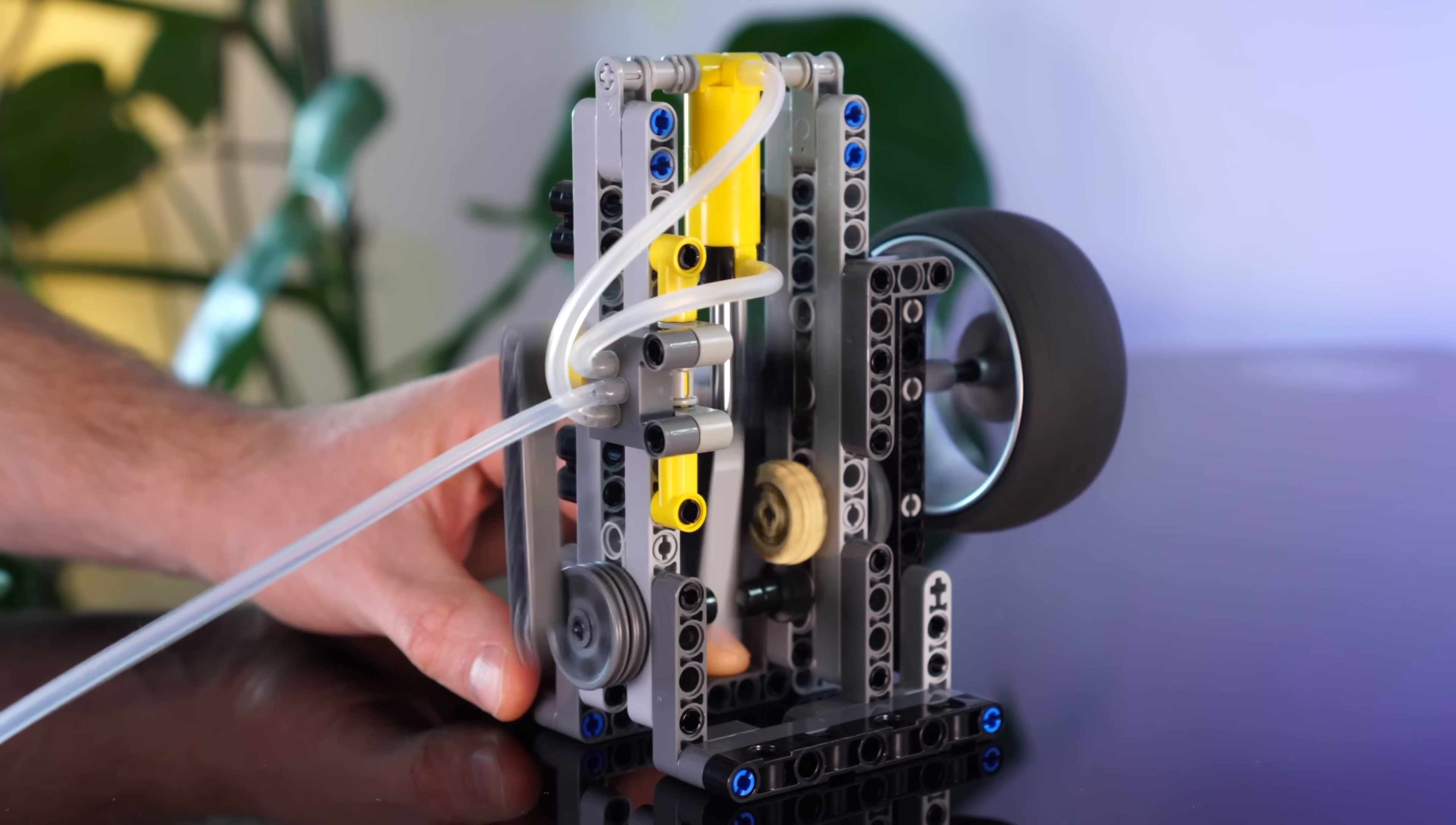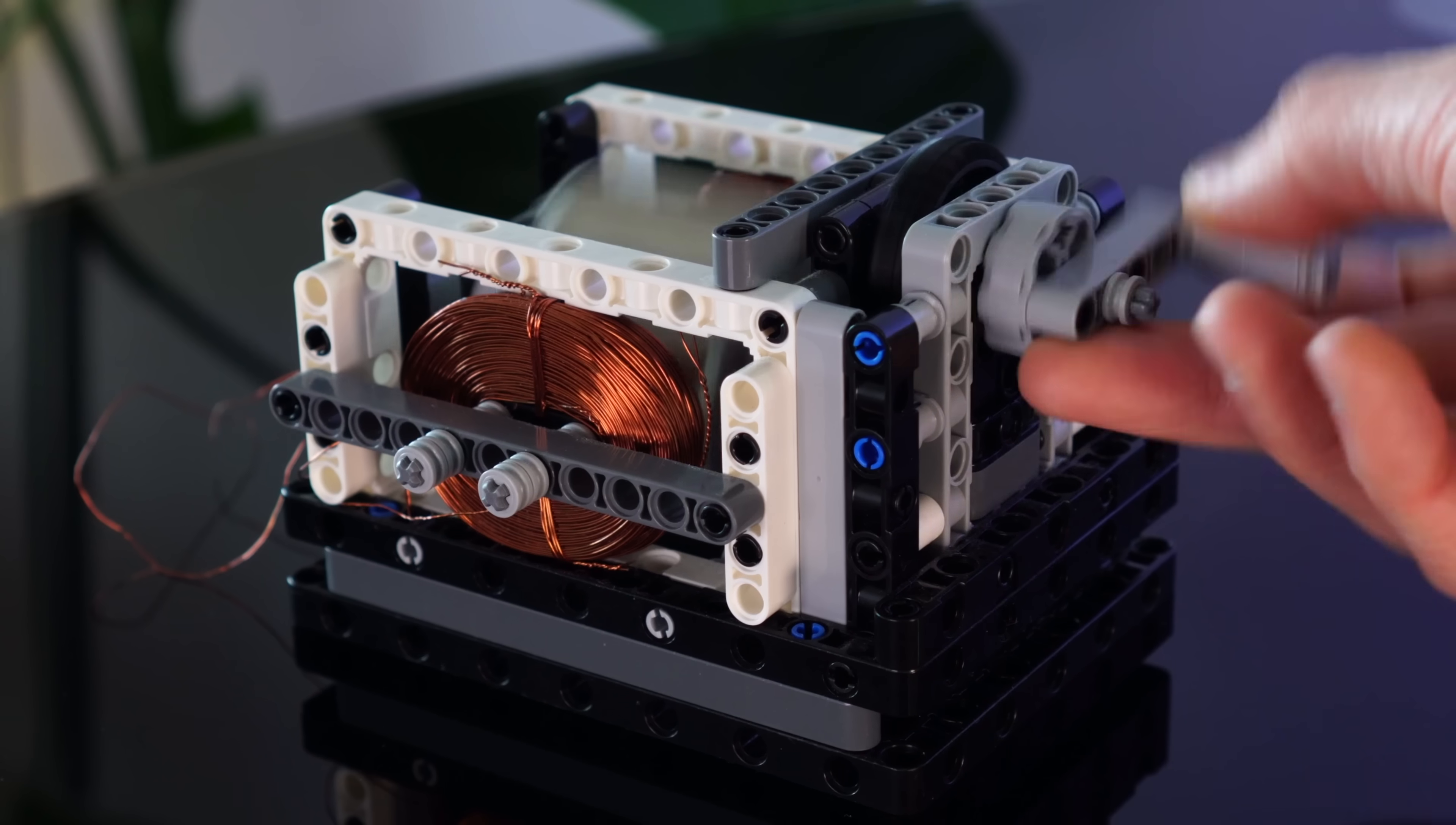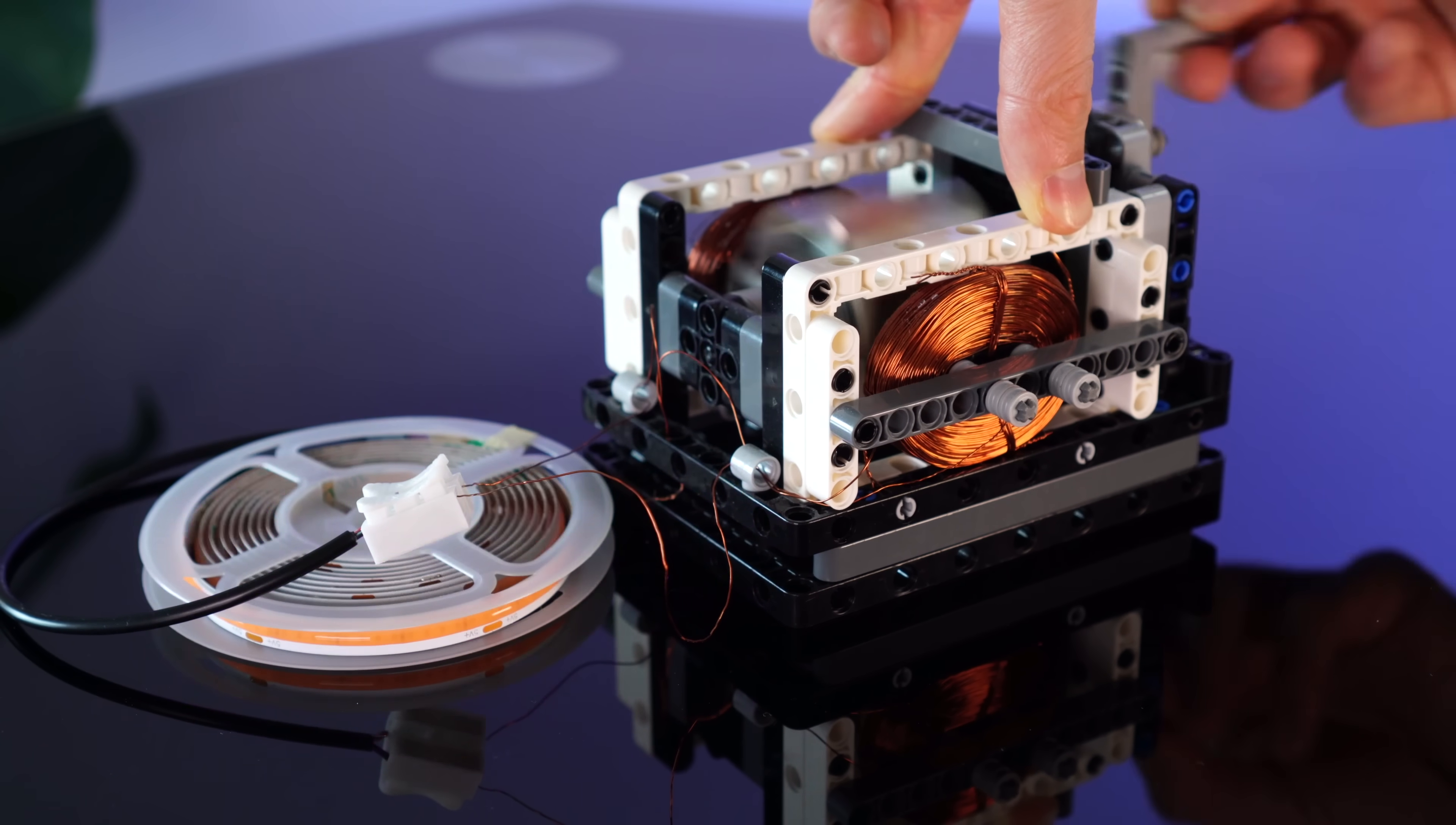And you know what? I already have a little LEGO generator from a previous video. This guy has some beefy magnets sandwiched between some copper coils, giving us a simple one-phase output. Let's see how it does with that LED spindle. Okay, well clearly outputs enough for this.